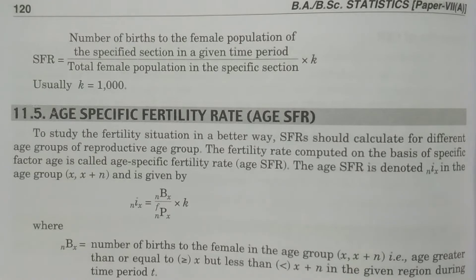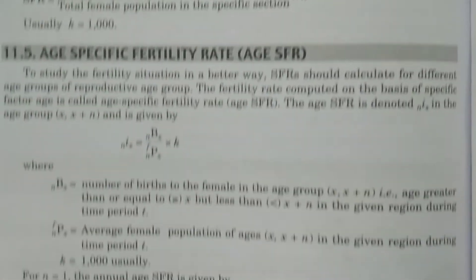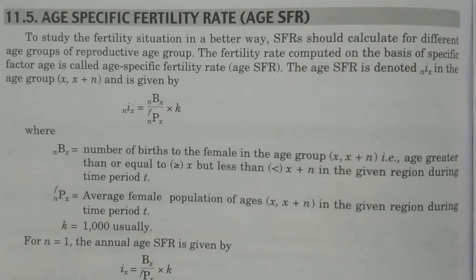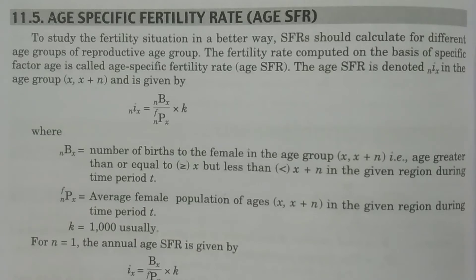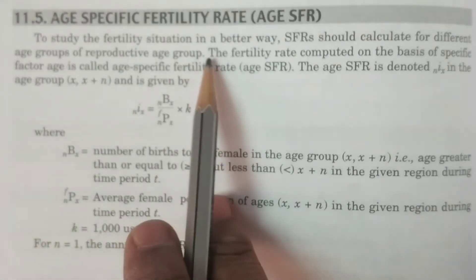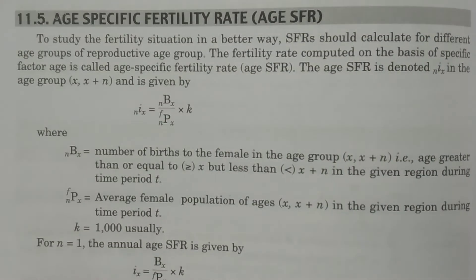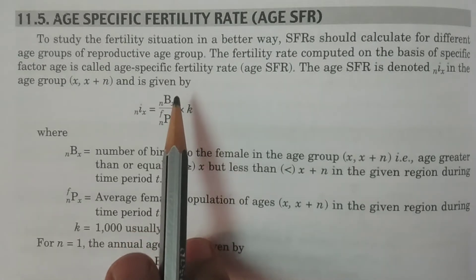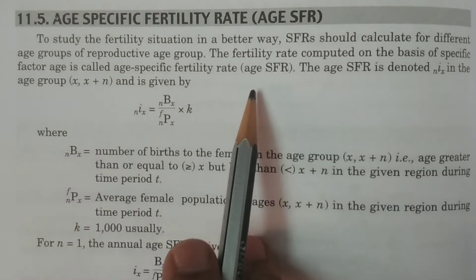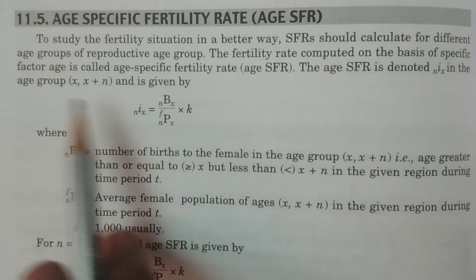For any specific region we calculate this — that is for any particular specific section of the population in a particular given time period. It is nothing but specific fertility rate. Now if we calculate age specific fertility rate, age SFR, this is nothing but specific fertility rate calculated for the factor age in different age groups. The study of fertility in a better way: SFR should be calculated for different age groups of the reproductive age group. Such a fertility rate computed on the basis of the specific factor age is known as age specific fertility rate.